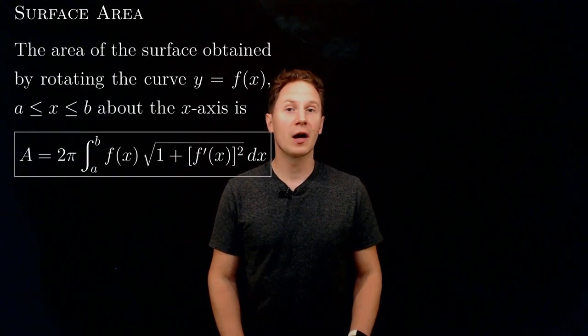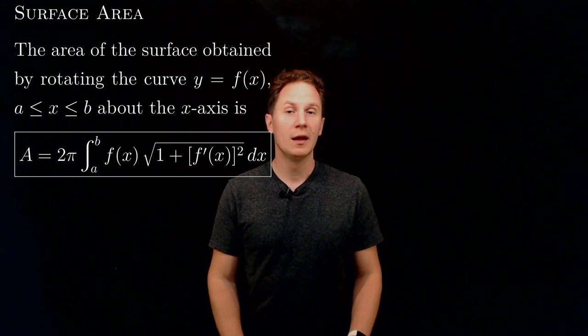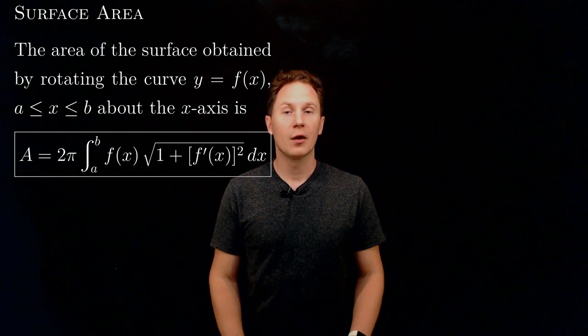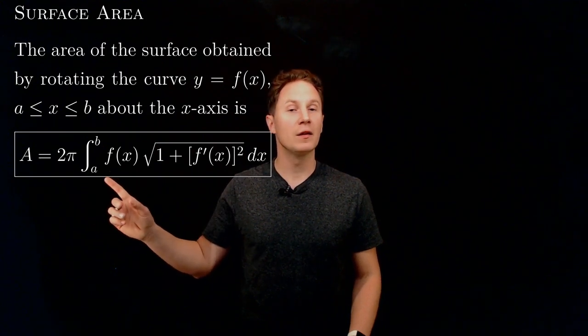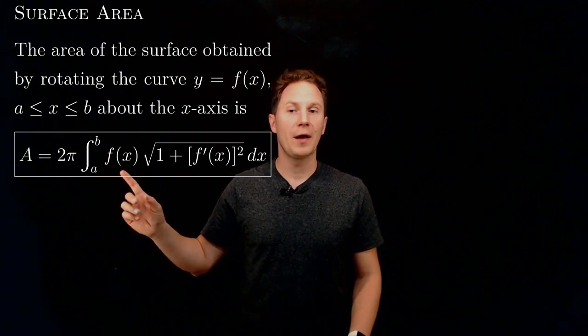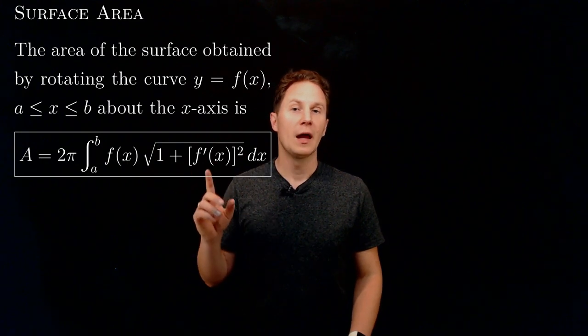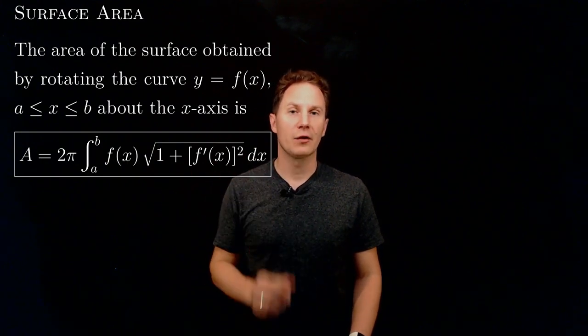Integrals can also be used to find the area of surfaces obtained by rotating the graph of a function about the coordinate axis. Specifically, let's consider the graph of a function f over the interval between a and b and rotate the graph about the x-axis. Then you get a solid of revolution whose surface area is given as 2π times the definite integral from a to b of f(x) times the square root of 1 plus f′(x)² dx.